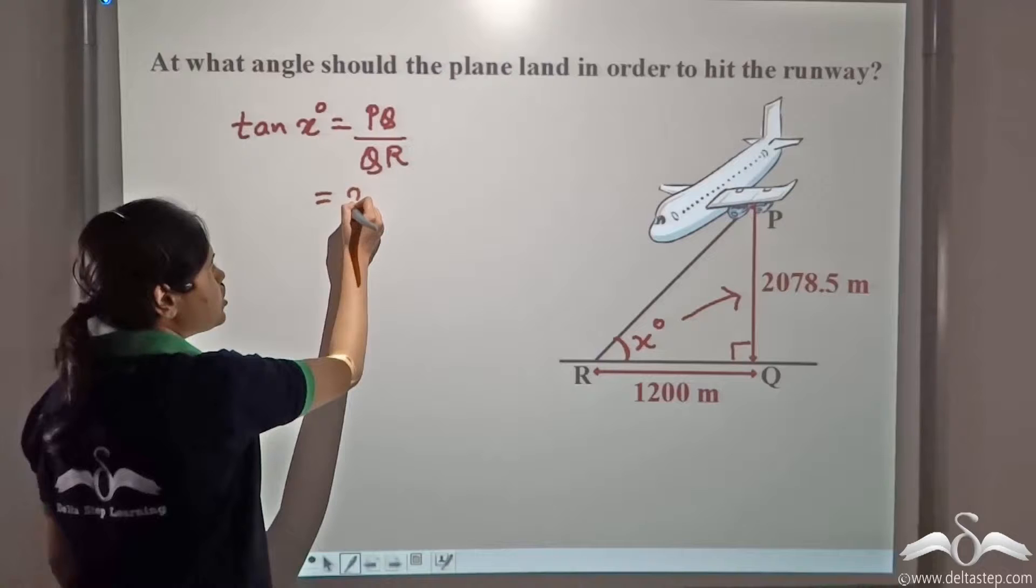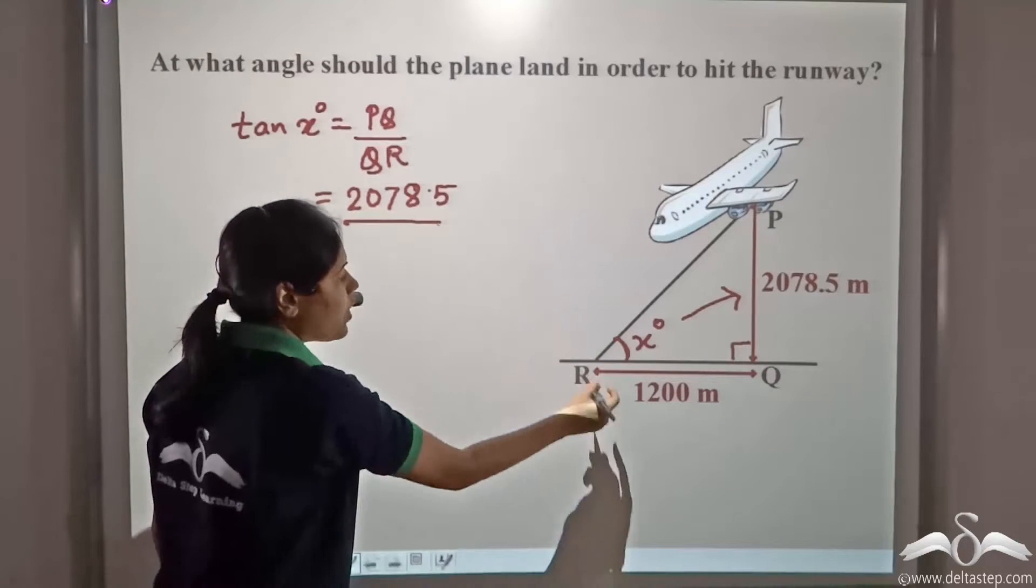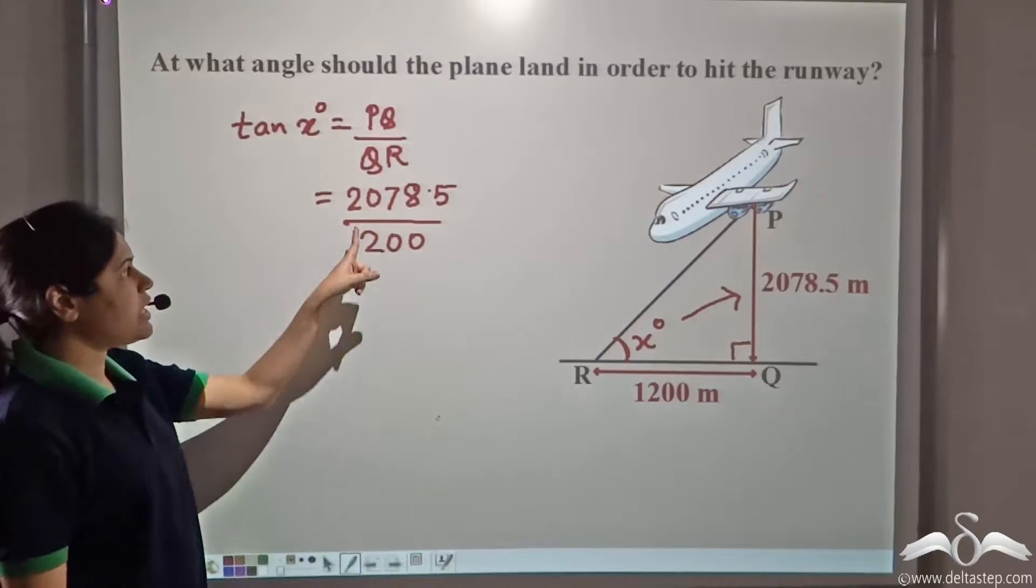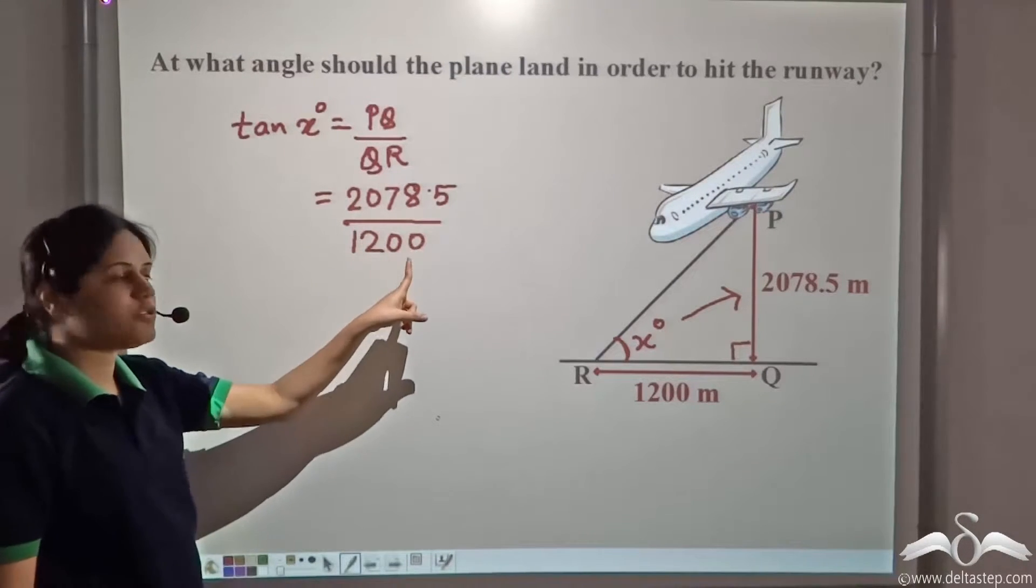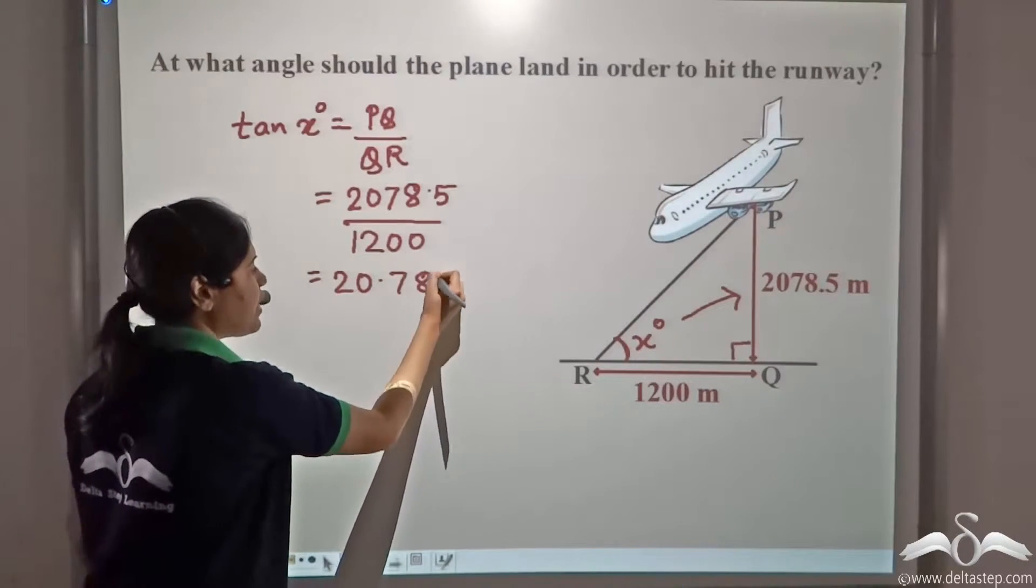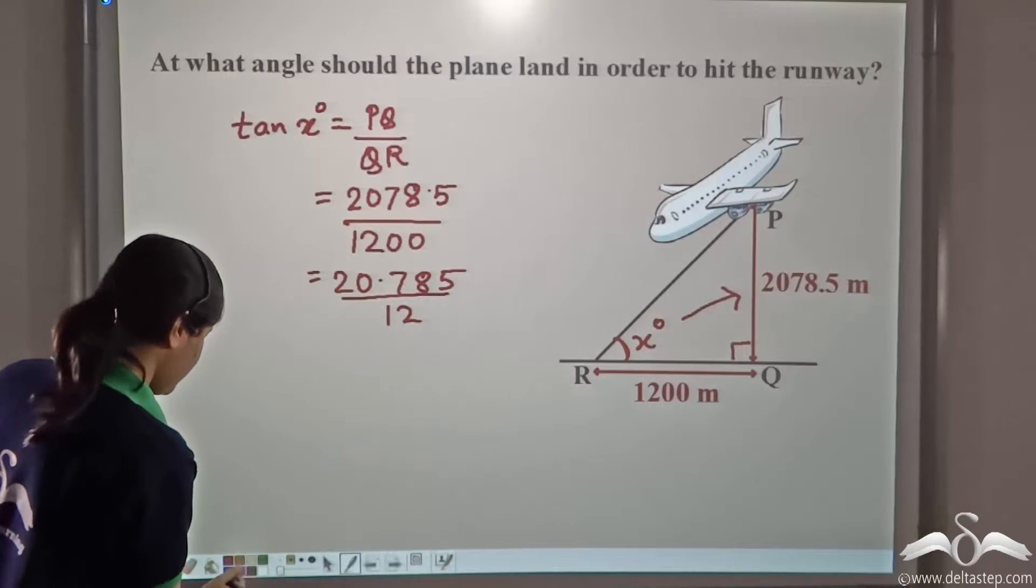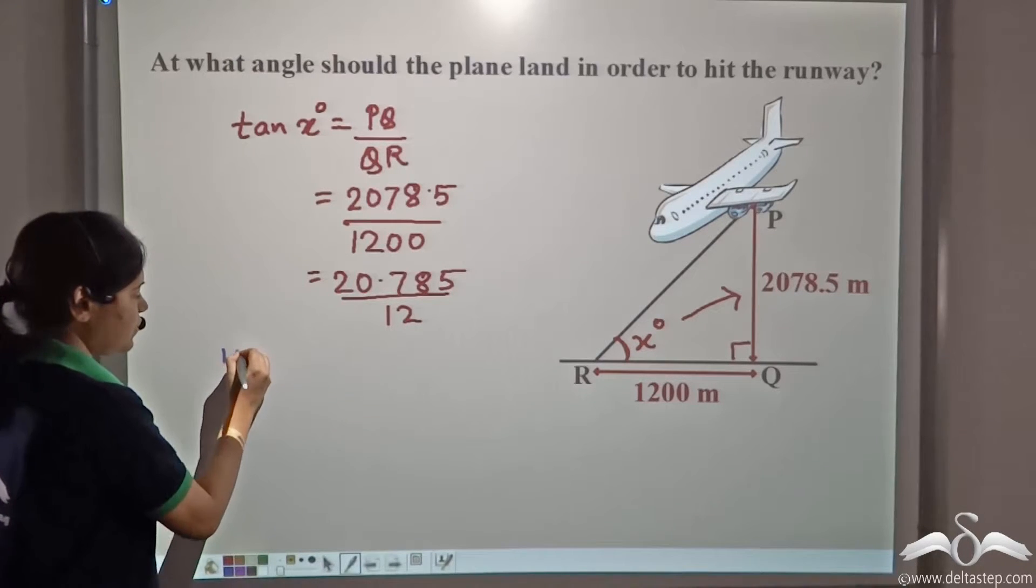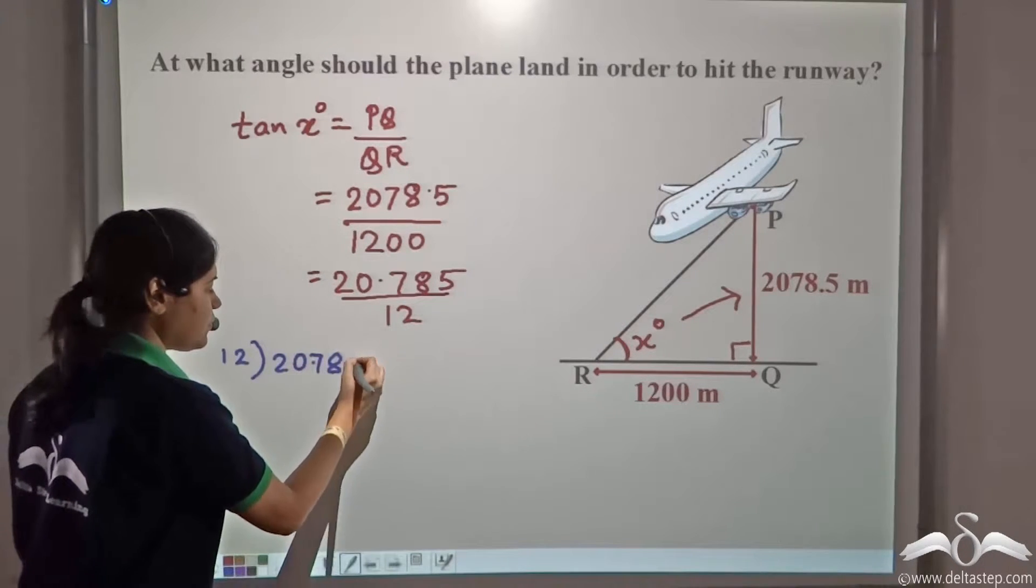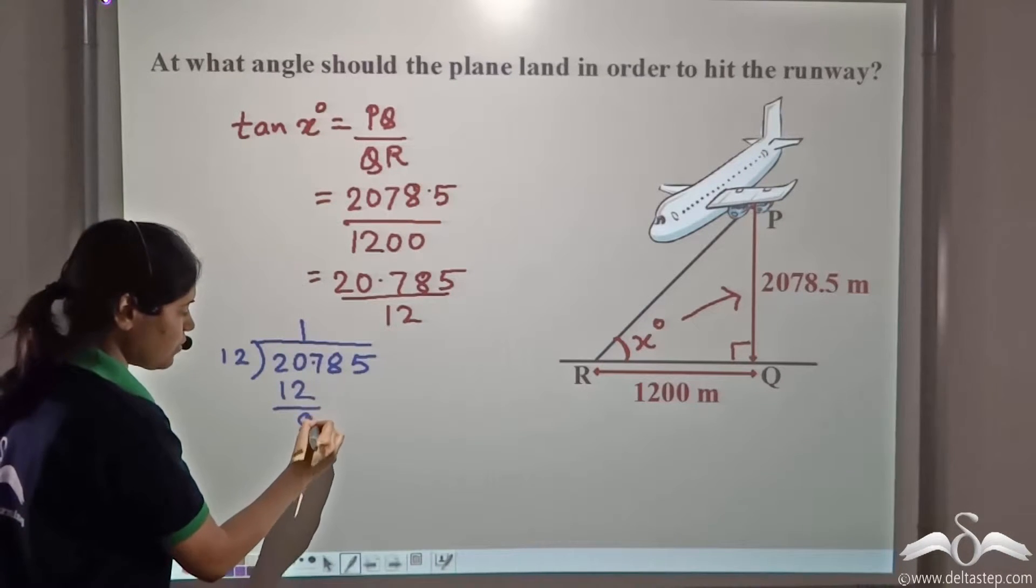Now, PQ is two zero seven eight point five and QR is twelve hundred. Let's divide two zero seven eight point five by twelve hundred. This is equal to two zero point seven eight five divided by twelve. On dividing this, we get one eight point seven.